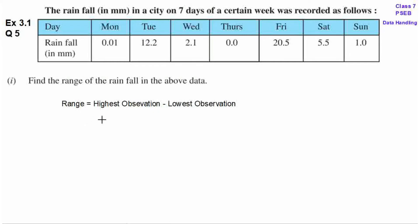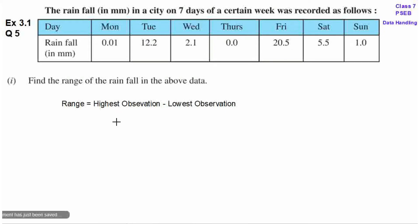So, highest observation यहां पर कौन सी है? यहां पर सारी observations check करो: 0.01, 12.2, 2.1, 0.0, 20.5, 5.5, 1.0. So, highest observation है 20.5.